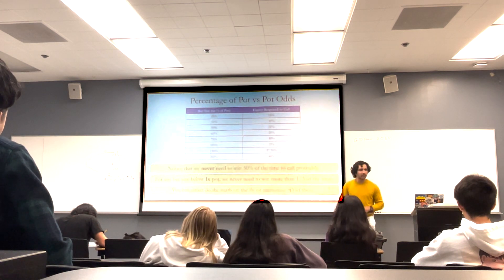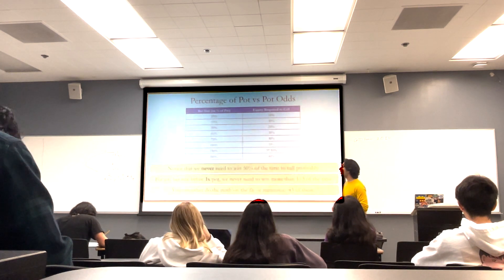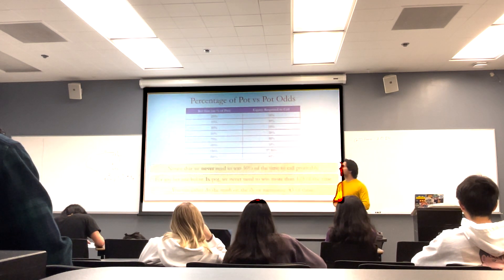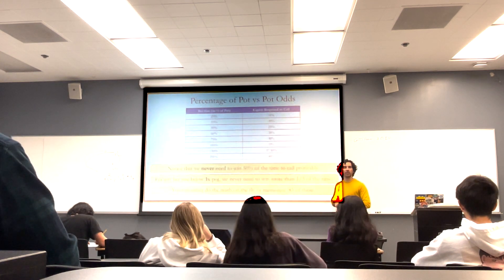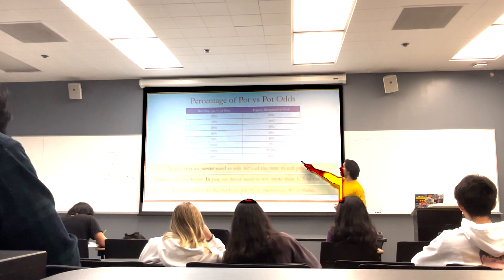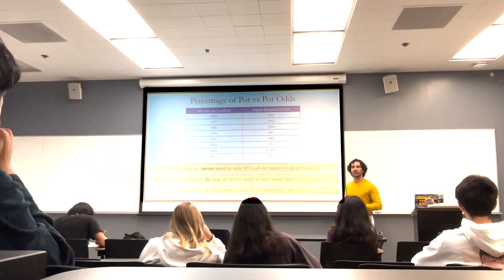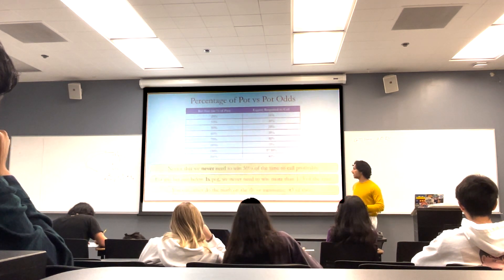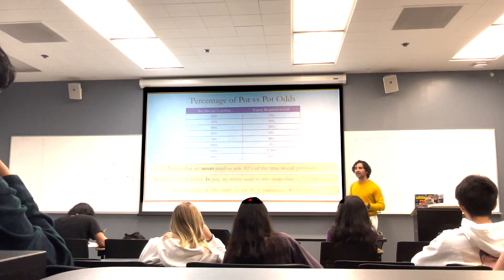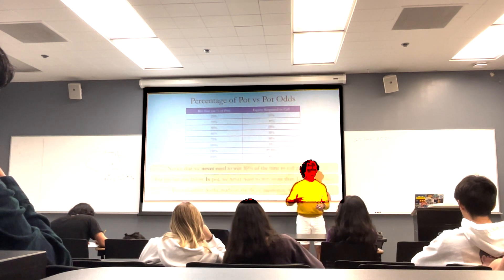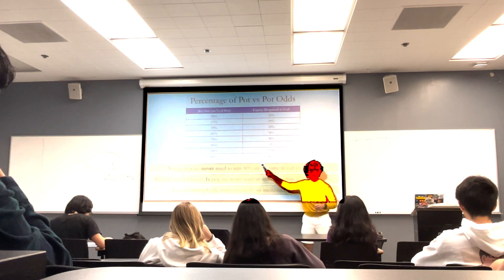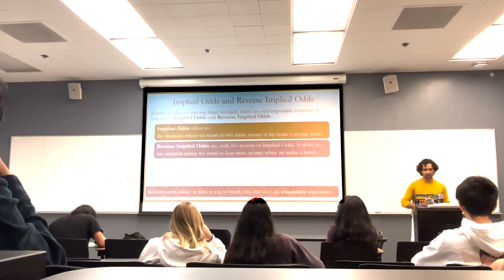This pot odds table shows us the required equity for different bet sizes — you don't need to memorize the full table, just a few anchoring numbers. The key thing to note is you actually never need to win half the time to call profitably. Why? Because we have bets — the sizes of the pot change. It's a weighted average, not a raw 50%. This is one of the mechanics of why we don't linearly bet — we don't bet one on the flop, one on the turn, one on the river. The pot grows exponentially because we bet as a proportion of the pot.